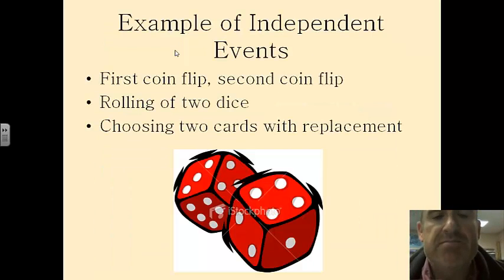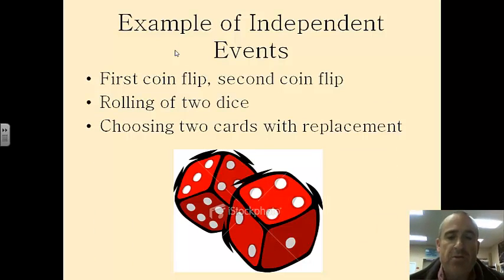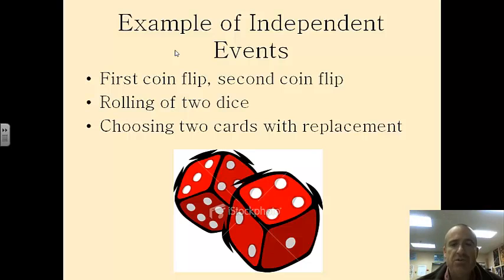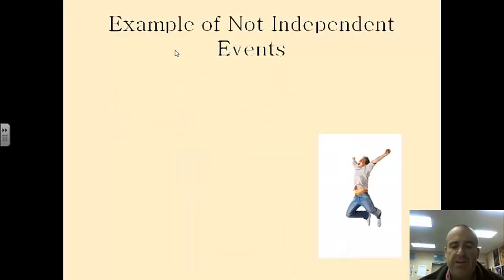So an example of independent events, first coin flip, second coin flip. Rolling two dice. Choosing two cards with replacement. So those are all examples of some independent events.